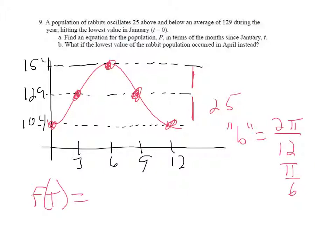equals the reflected cosine function, negative 25 with an amplitude. We know the B number is π/6. It's not shifted left or right at this point, and we see the midline is 129.